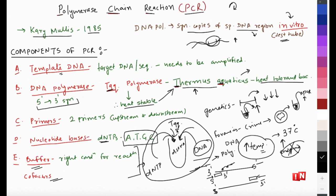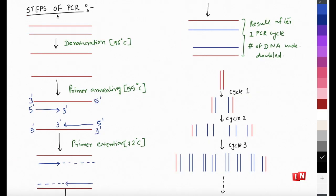In short, you have added everything in the test tube: your template DNA - the target DNA sequence you want to study; Taq polymerase because we need a heat-stable polymerase; primers; and dNTPs. Now let's see what happens exactly in PCR - how the amplification occurs. You have your double-stranded template DNA. The first thing you need to do is separate the two strands. In PCR we use heat to break the hydrogen bonds and separate them, increasing the temperature to 96 degrees centigrade.